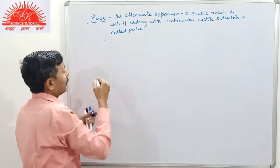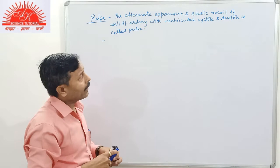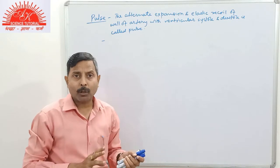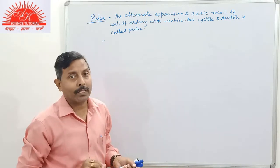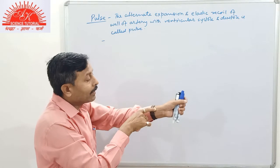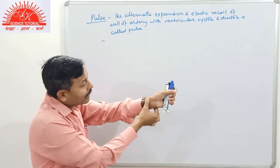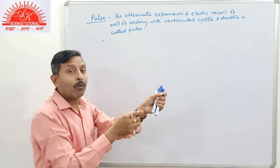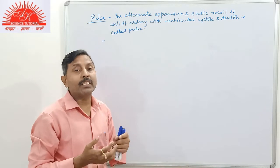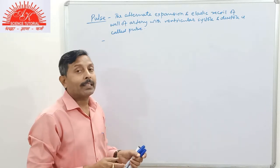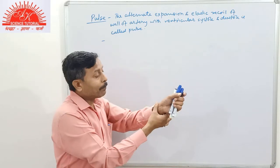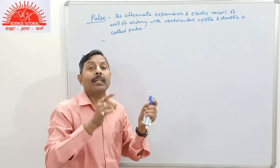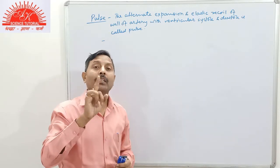Pulse can be experienced at places in the body where the artery is superficially placed. For example, at the wrist there is the radial artery. When we place our thumb there, we can easily feel the jerk. When we visit doctors, they often hold your hand in that position — at that time they are counting the pulse rate and hence counting the heart beat.